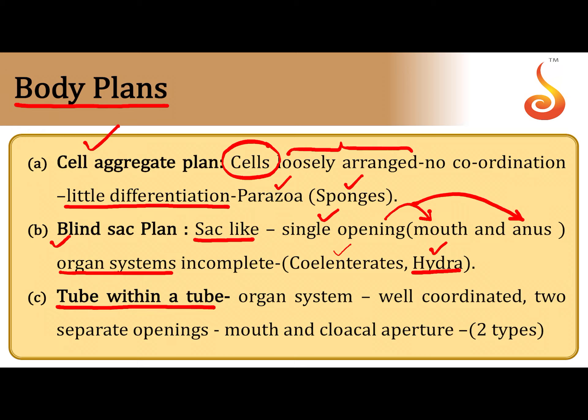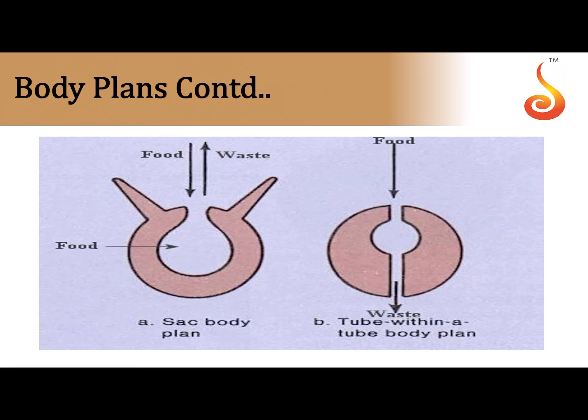The most advanced type is the tube-within-tube body plan. There is a central cylindrical tube-like structure which is the gut. The gut starts with the mouth and ends with the anus, giving a complete digestive system. The outer tube represents the body wall of the organism, so the gut is like a tube sitting inside a broader tube which is the body wall — hence it is called the tube-within-tube type of body plan.